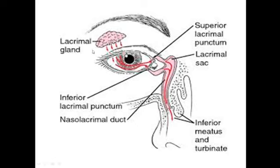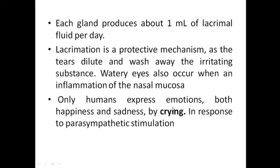The lacrimal fluid drains into the superior and inferior lacrimal punctum, then to the lacrimal canaliculi, then to the lacrimal sac, and then to the nasolacrimal duct. Each gland produces about one milliliter of lacrimal fluid per day. Lacrimation is a protective mechanism, as tears dilute and wash away irritating substances that come to the eye.